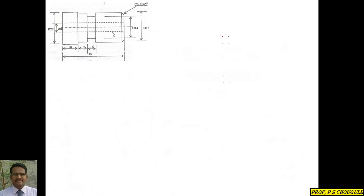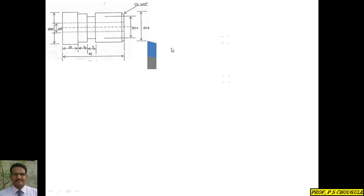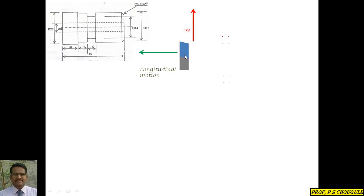For the process sheet, you need to know the tool motion. If I want to drill this component throughout, I need to move the tool in the longitudinal direction, which is parallel to the axis of the component. If I want to perform a facing operation, my tool will move perpendicular — we call this transverse motion. If the tool moves parallel to the axis, it is longitudinal motion; if it moves for facing, it is transverse motion.